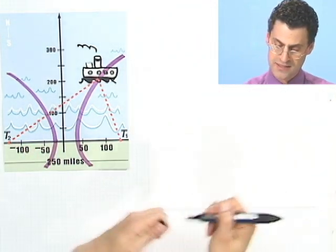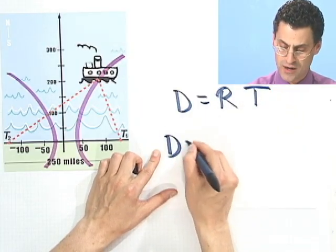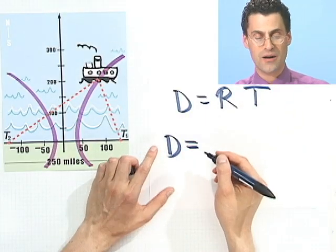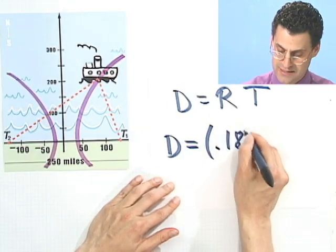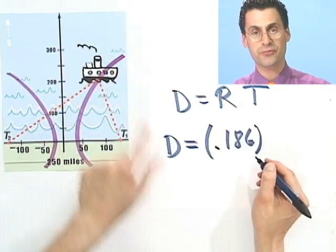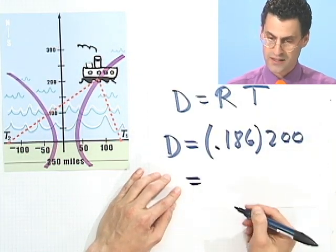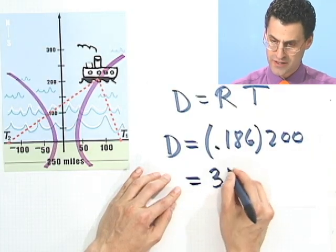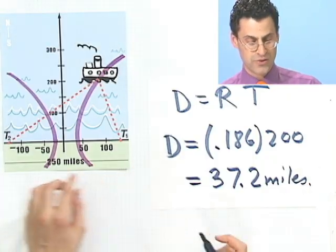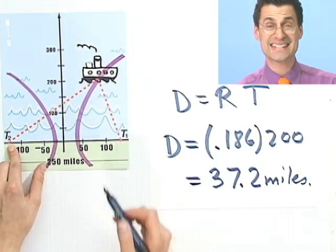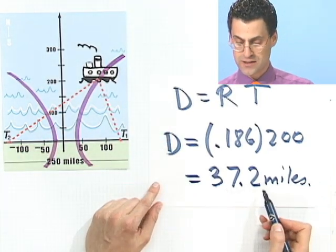We can figure that out because distance equals rate times time. D = (0.186)(200) = 37.2 miles. That's the difference in distance between this length and that length.